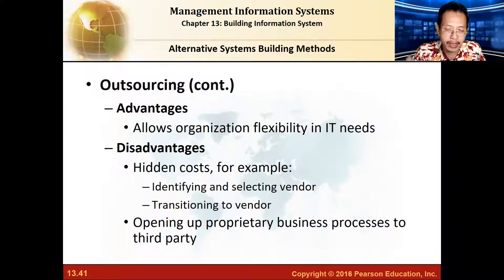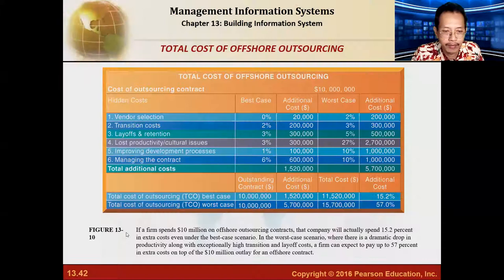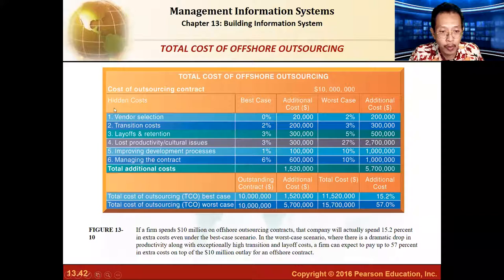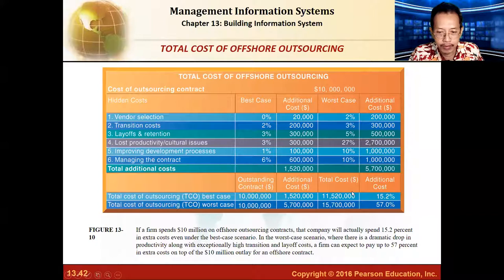There are also hidden costs that are not directly apparent — such as vendor selection costs, transition costs, and so on. These are hidden costs when you outsource your software. There may be a best-case and worst-case scenario showing the range of costs. For example, the stated cost might be $10 million, but the total cost including hidden costs could be between $11.5 million and $15.7 million.